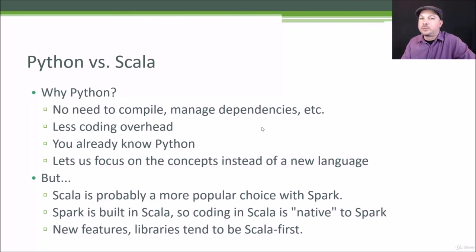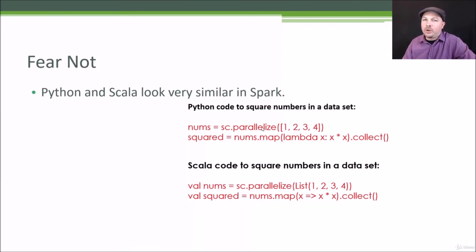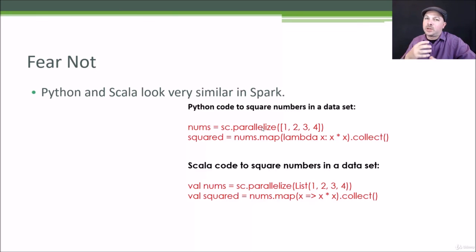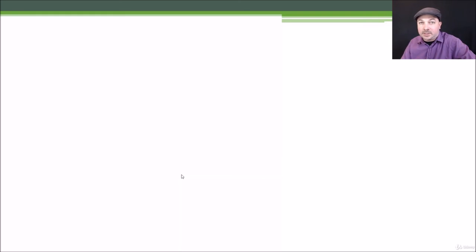If you were to do Spark programming in the real world, there's a good chance people are using Scala. However, in Spark, Python and Scala code ends up looking very similar because it's all around the same RDD concept — the syntax is slightly different, but not dramatically so. If you can figure out how to do Spark using Python, learning to use it in Scala isn't that big of a leap. So let's look at some examples and dive in, and talk in more detail about the Resilient Distributed Data Store next.